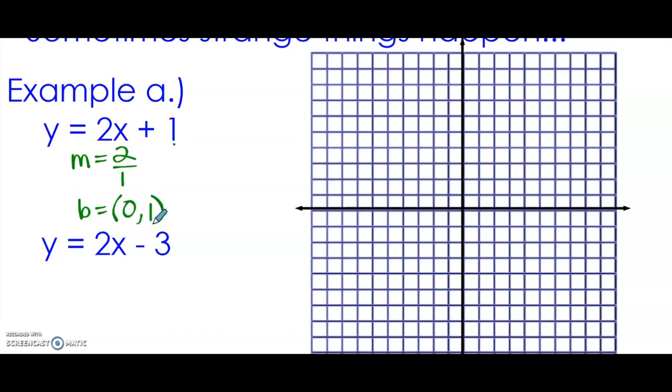We're going to begin graphing at the y-intercept on the y-axis at positive 1. The slope of 2 over 1 tells us to rise 2, run 1. So from the y-intercept, we're going to rise 2, run 1—up 2, right 1. This is a positive slope.